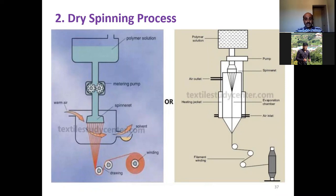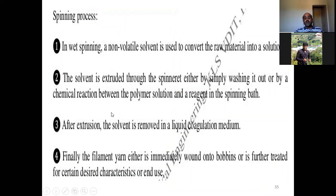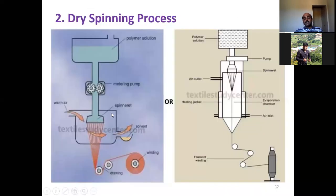The key difference between wet spinning and dry spinning is how the solvent is removed. In wet spinning, the solvent is removed in a liquid coagulation bath. In dry spinning, the solvent is removed by passing the extruded filaments through a warm air chamber, causing evaporation.